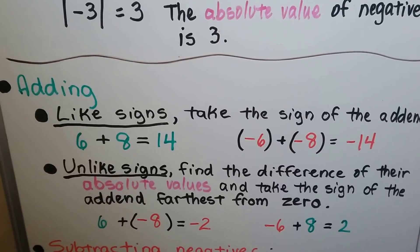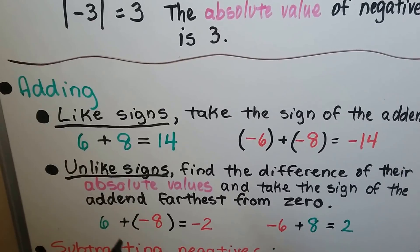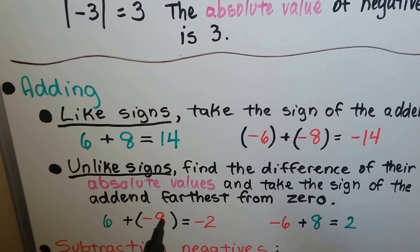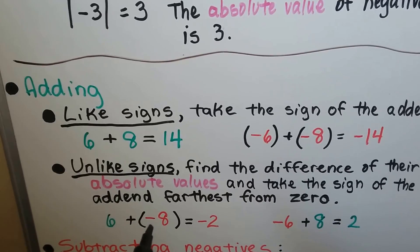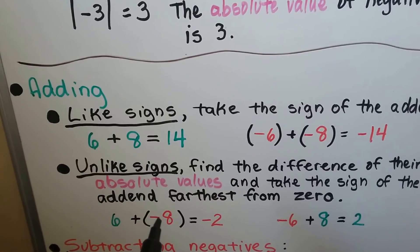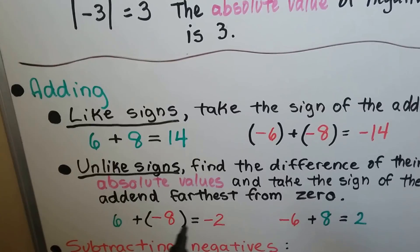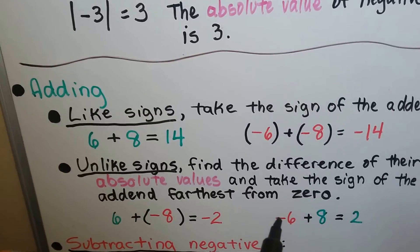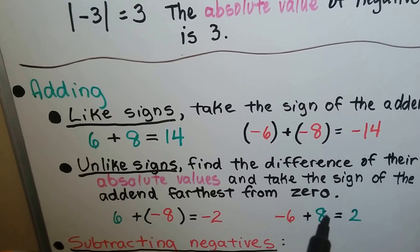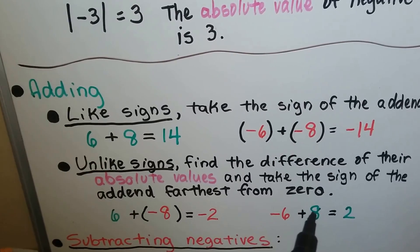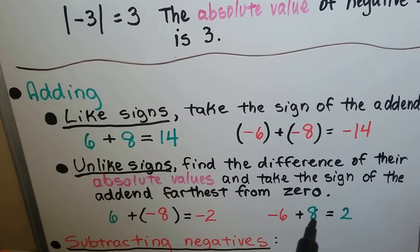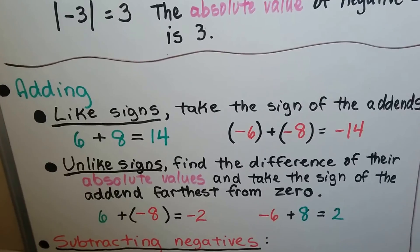When we have unlike signs, we find the difference of their absolute values. What's the difference between a 6 and an 8? It's a 2. We take the sign of the addend that's farthest from zero. This negative 8 is farther from 0 than 6, so our answer is going to be negative. When we have negative 6 plus 8, the difference between 6 and 8 is 2, and the 8 is positive, so the answer is going to be positive.